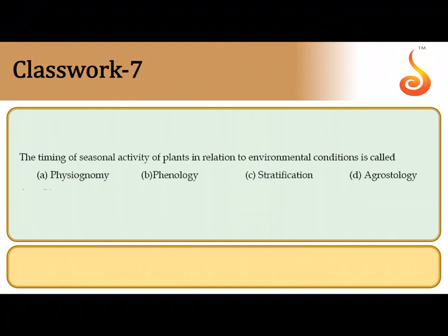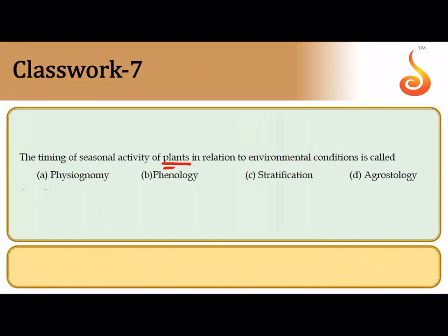The seventh question covers the timing of seasonal activity in plants. Plants flower in different seasons depending on day length and the length of uninterrupted darkness. The process of reproduction is also timed according to environmental conditions. This kind of seasonal activity in relation to a specific environmental condition is referred to as phenology. The correct answer is the second option.